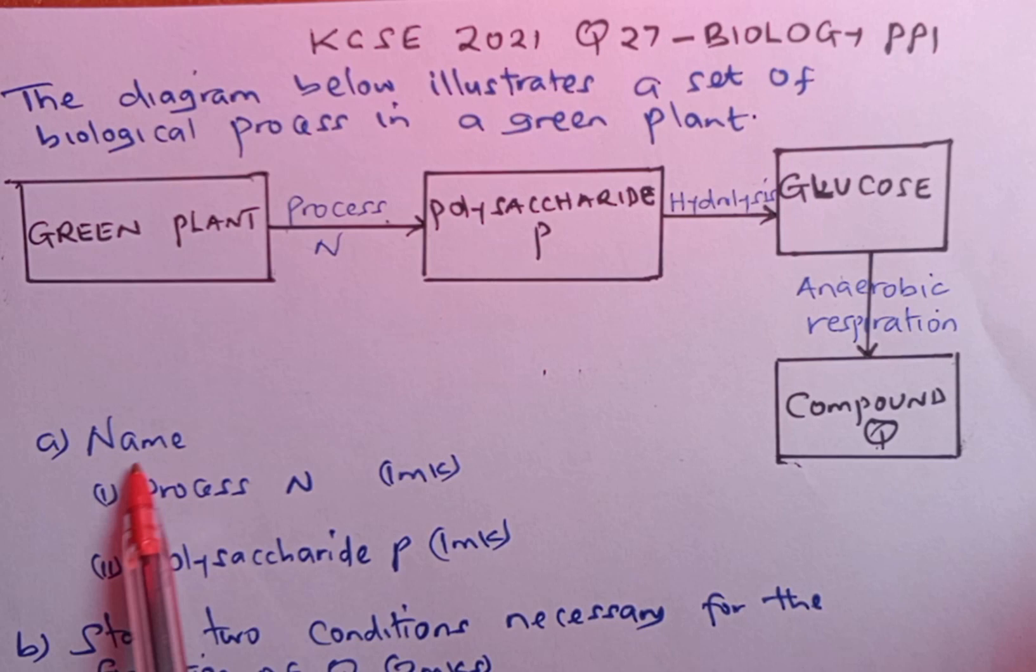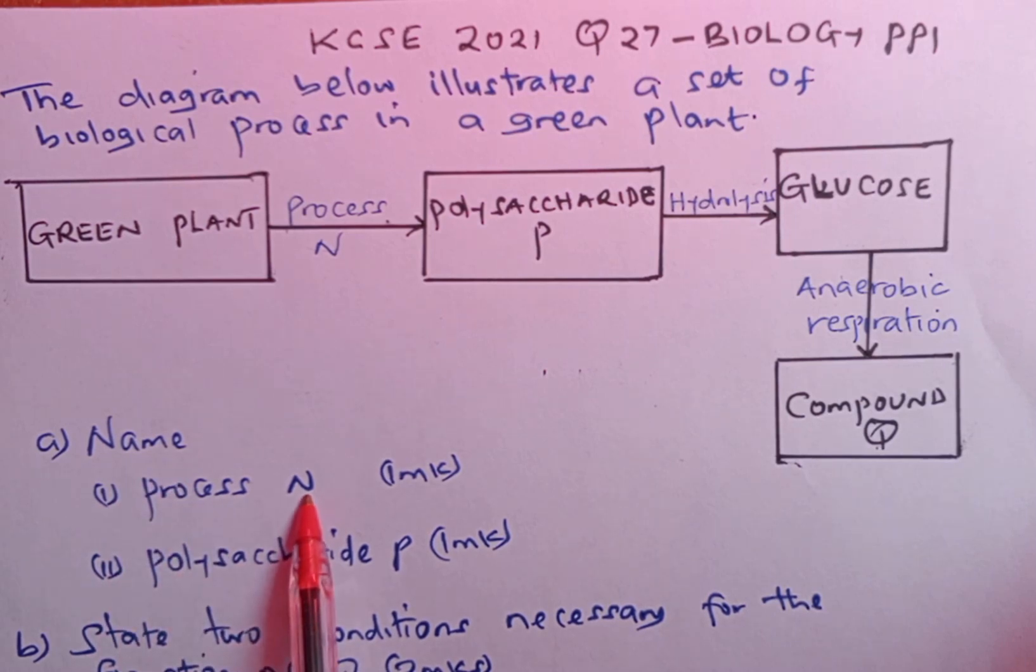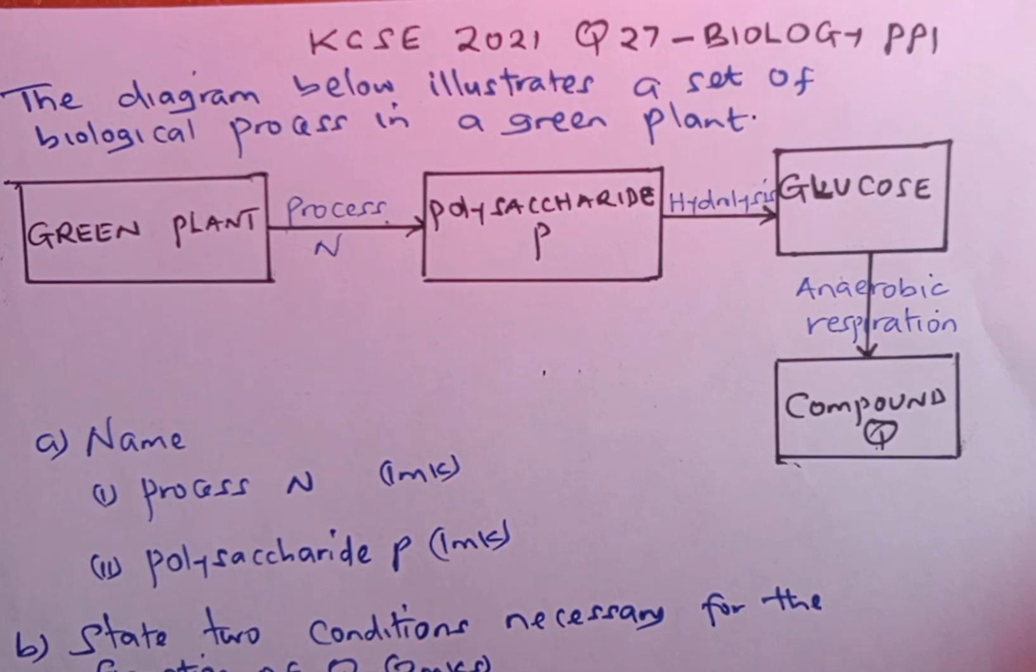We are told to name process N, then polysaccharide P, before we look at question B and C respectively.